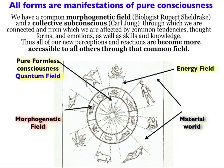Now we're going to move on to our perception. This is a perception quite developed in spiritual teachings, but also based on some concepts by a biologist and a psychologist called Jung. Rupert Sheldrake — you may have read some of his books — has created the theory of the morphogenetic field.